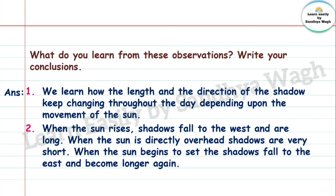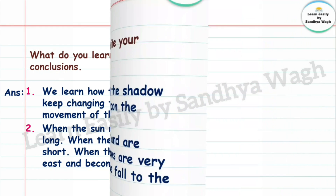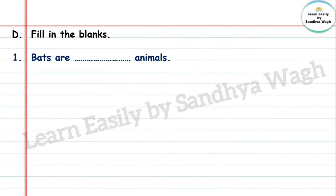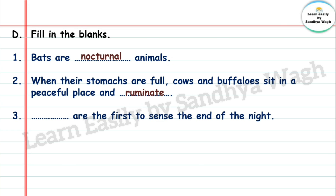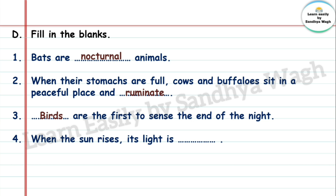Fill in the blanks. 1. Bats are nocturnal animals. 2. When their stomachs are full, cows and buffaloes sit in a peaceful place and ruminate. 3. Birds are the first to sense the end of the night. 4. When the sun rises, its light is soft.